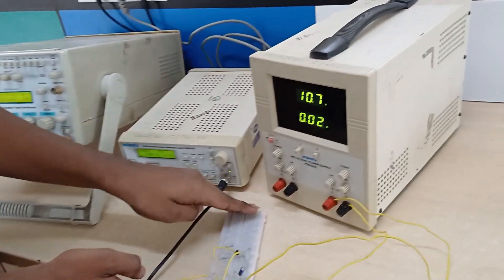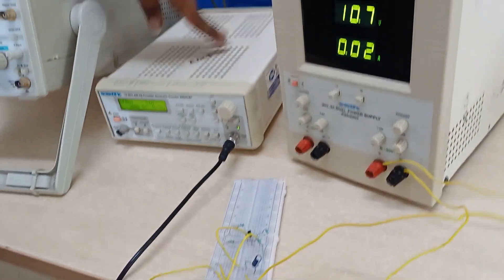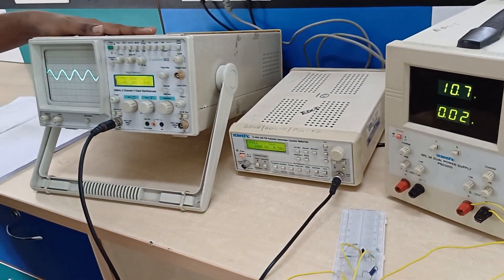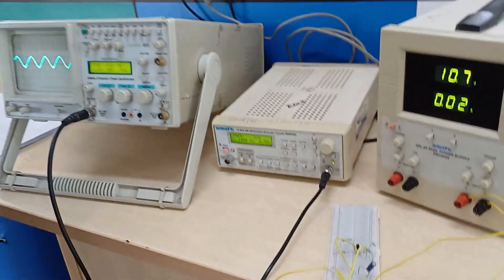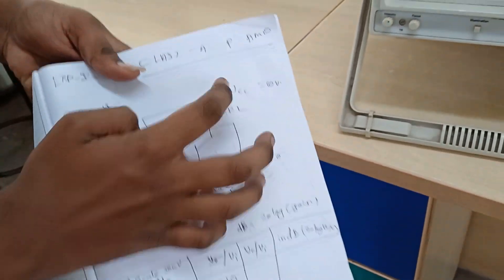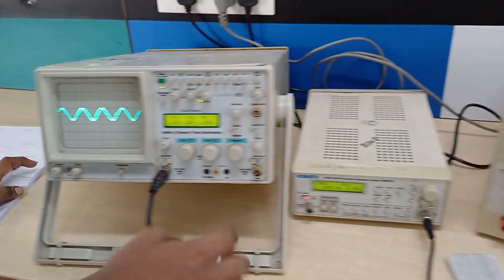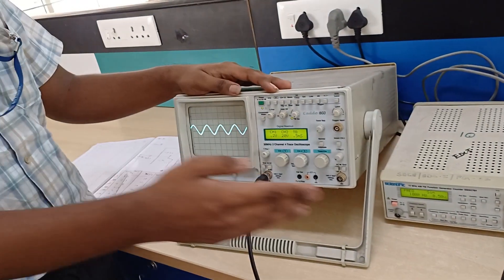This is the circuit. This is the power source connected to the circuit, and here we have the oscilloscope. Here is the circuit as per this circuit diagram. Now we are going to see the frequency response of this Class C power amplifier.